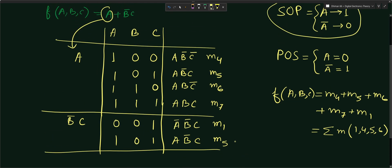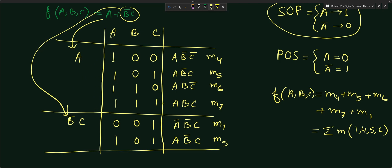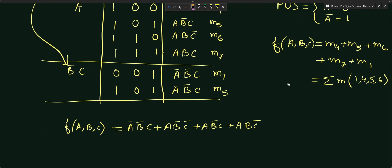Let me repeat the technique once more. You write the two terms from the given expression into the table. For the first term A: since it is SOP, A means value 1, and we introduce B and C with all four combinations 00, 01, 10, 11. For the second term B̄C: B̄ means zero and C means one, written twice, then introduce A with values 0 and 1.